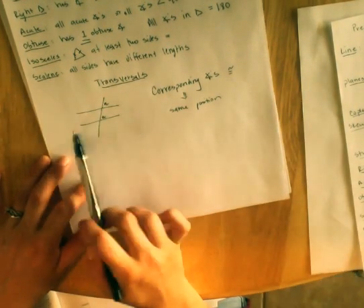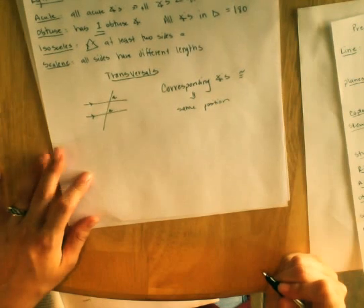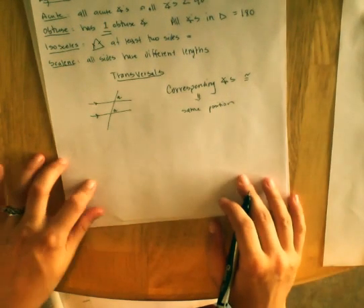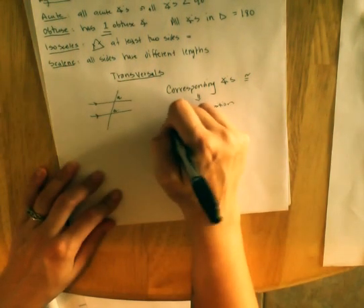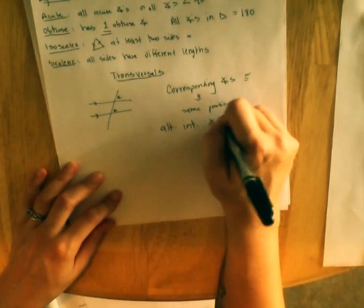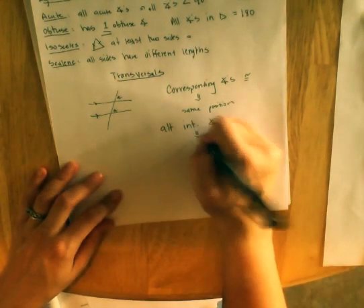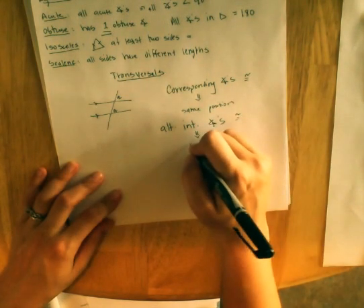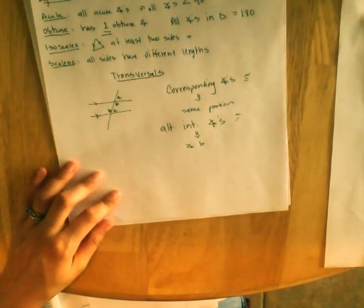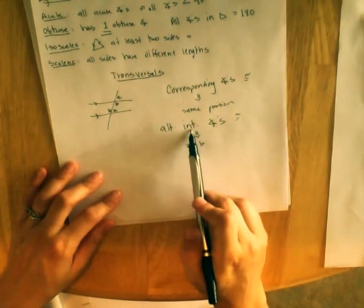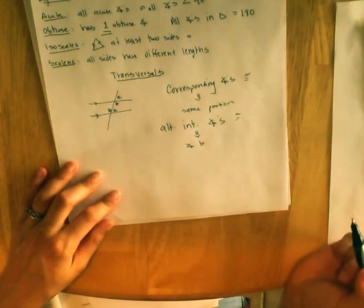We also know that if two parallel lines, I'm going to denote them like this so we remember they are parallel, if they are cut by a transversal then each pair of alternate interior angles is congruent. They are interior because they are on the insides of the parallel lines and alternate because they are on opposite sides of the transversal.